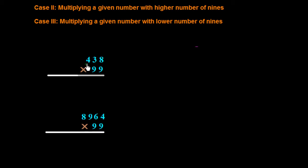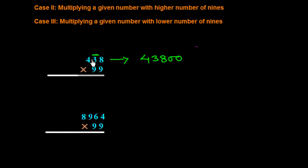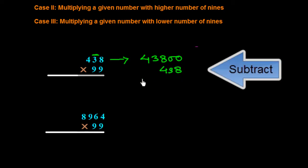We have to multiply 438 with 99. First, we look at how many digits are in the 9-series — there are 2 digits, so we add two zeros to the right side of 438, giving us 43800. Then we subtract 438 from this. So: 10 minus 8 is 2, 9 minus 3 is 6, 7 minus 4 is 3, giving 43362.